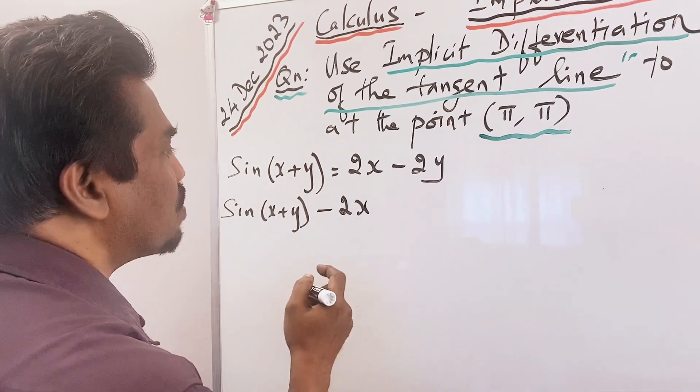Let us differentiate this term. It will become cos(x + y) times the differentiation of (x + y) with respect to x, minus 2·dx/dx + 2·dy/dx = 0. Expanding: cos(x + y)·(dx/dx + dy/dx) − 2 + 2·dy/dx = 0.